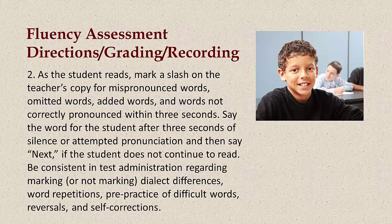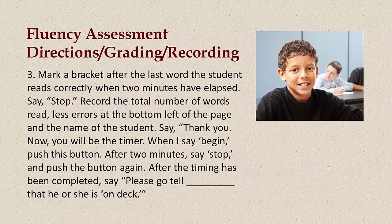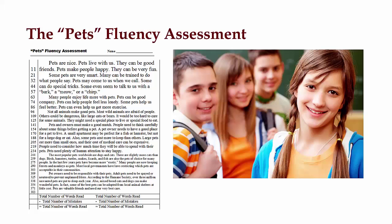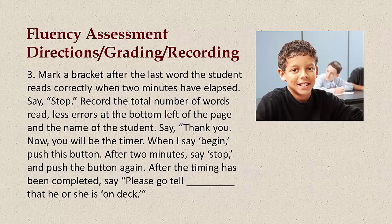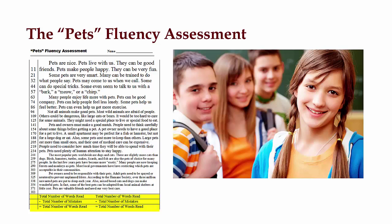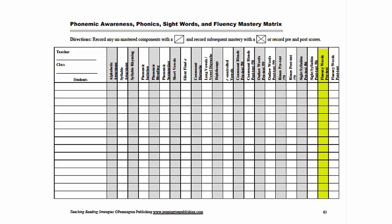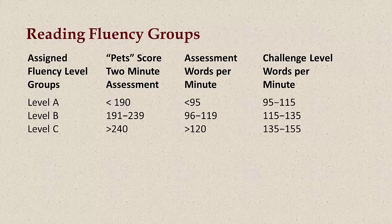Step 3: Mark a bracket after the last word the student reads correctly when two minutes have elapsed. Say stop. Record the total number of words read, less errors, at the bottom left of the page and the name of the student. Say thank you. Now you will be the timer. When I say begin, push this button. After two minutes, say stop and push the button again. After the timing has been completed, say please go tell Suzy that she is on deck. Once the assessments have been completed, the total number of words should be recorded in the Fluency Words pre-test column on the Phonemic Awareness, Phonic Sight Words, and Fluency Mastery Matrix for each student for use as the Diagnostic Baseline. Use the results of the PETS Fluency Assessment to assign one of three fluency level groups — levels A, B, or C — to each of your students.